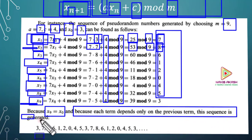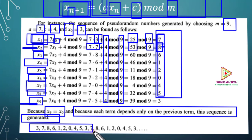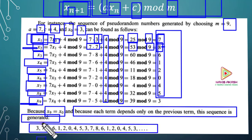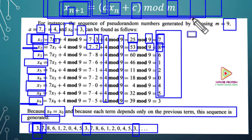This sequence is generated. The sequence is: 3, 7, 8, 6, 1, 2, 0, 4, 5, then 3 again. When you look at this number sequence, you can see it has a certain length. The sequence is complex. This is the nature of the pseudorandom number — normal people cannot predict it, but we can generate it.